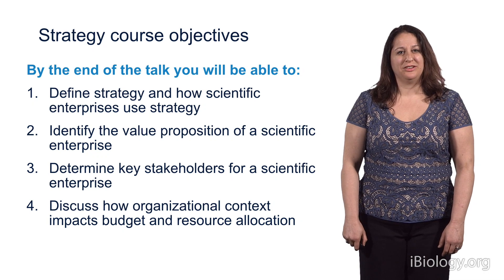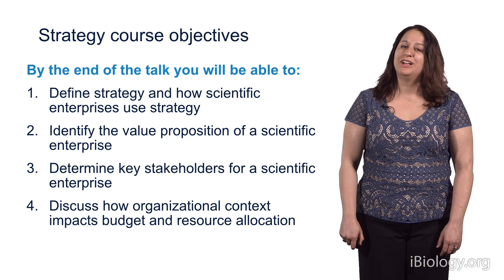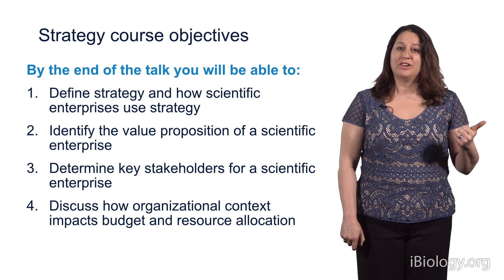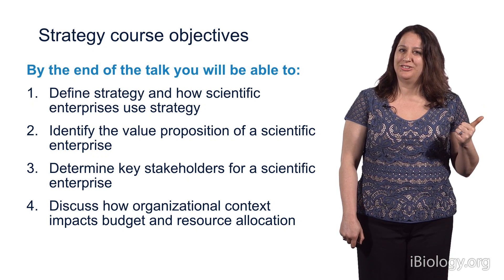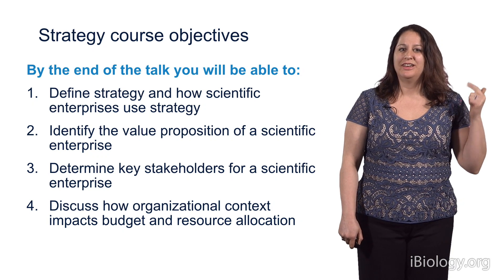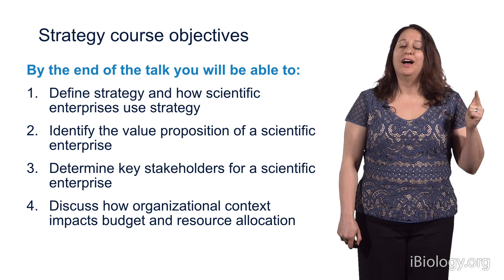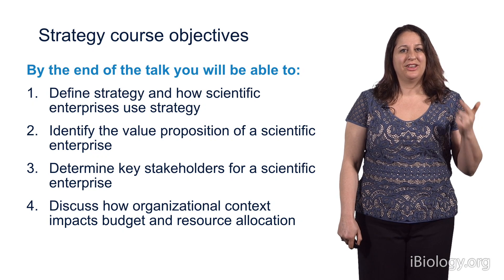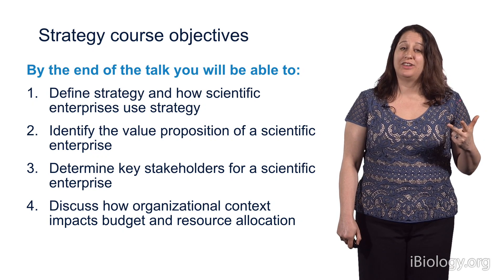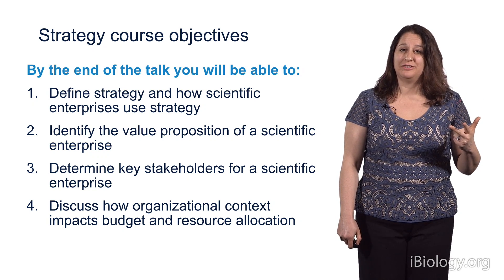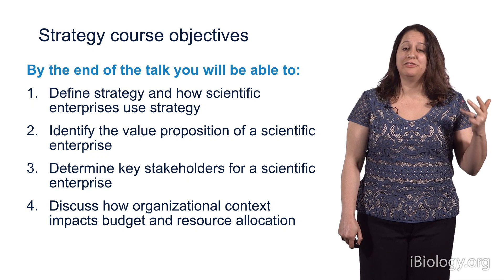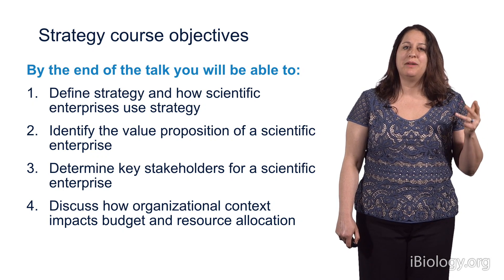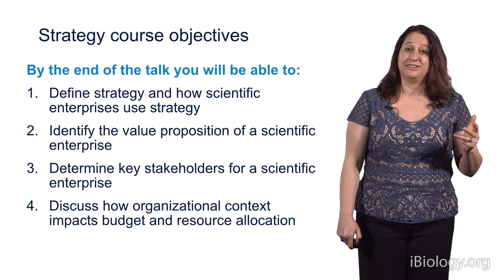Here are the course objectives. By the end of class today, you should be able to: one, define strategy and how scientific enterprises use strategy; two, identify the value proposition of a scientific enterprise; three, determine key stakeholders for a scientific enterprise; and four, discuss how organizational context impacts budget and resource allocation.